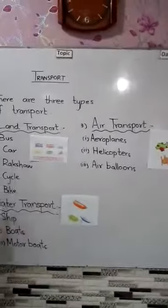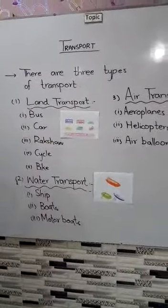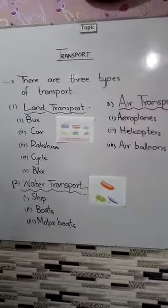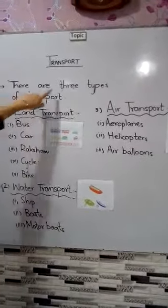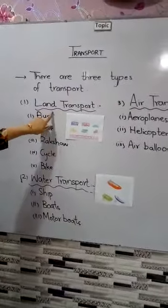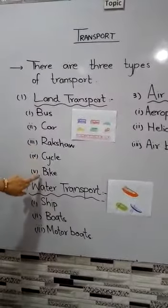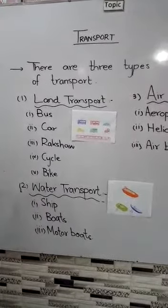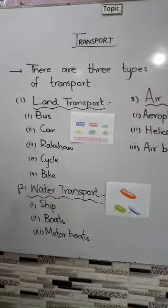These are the three types of transport. Transport is a means through which we travel from one place to another, or it is the procedure in which either goods or people are shifted from one place to another. There are three types of transport. In land transport, we travel on roads by using bus, car, raksha, cycle, bikes and other four-wheeled and two-wheeled vehicles that run on petrol, diesel, oil, fuel and CNG.